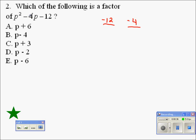Well, let's look at all the combinations that multiply to negative 12. Negative 12 times 1 multiplies to negative 12. 12 times negative 1, that's a different combination. Negative 4 times positive 3. Positive 4 times negative 3. Negative 6 times positive 2. And positive 6 times negative 2.